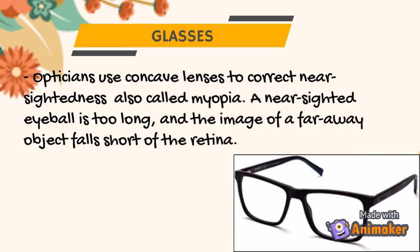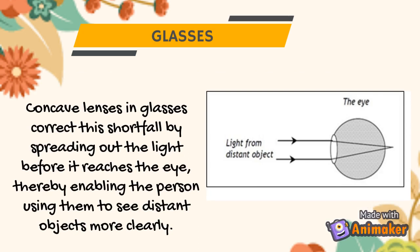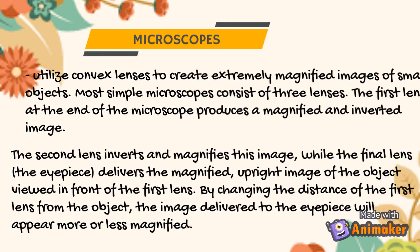Then we have glasses. Opticians use concave lenses to correct nearsightedness, also called myopia. A nearsighted eyeball is too long, and the image of a faraway object falls short of the retina. Concave lenses in glasses correct this by spreading out the light before it reaches the eye, enabling the person to see distant objects more clearly. Next, we have microscopes, which utilize convex lenses to create extremely magnified images of small objects. Most simple microscopes consist of three lenses: the first produces a magnified and inverted image, the second inverts and magnifies this image, and the final lens — the eyepiece — delivers a magnified, upright image of the object. By changing the distance of the first lens from the object, the image delivered to the eyepiece will appear more or less magnified.